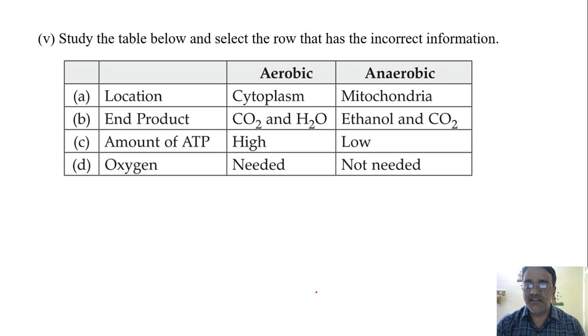Now we'll move towards the next question. Study the table below and select the row that has the incorrect information. In both types of respiration the end products are same. The energy level ATP is high in aerobic and low in anaerobic. Oxygen is required in aerobic and not required in anaerobic - this is also correct.